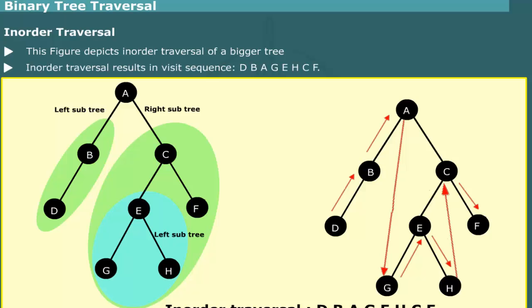Thus, in-order traversal leads to the visit sequence D, B, A, G, E, H, C, F.